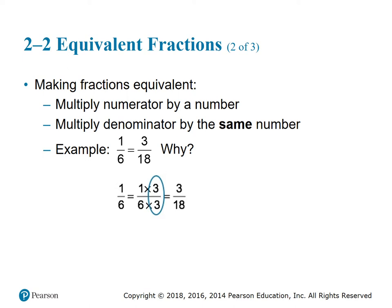How do we create an equivalent fraction? We simply multiply both the numerator and the denominator by the same number. For example, 1/6 equals 3/18 because we multiplied the 1 by 3, giving 3, and the 6 by 3, giving us 18. If we had chosen 2, multiplying 1 by 2 and 6 by 2, we would get an equivalent fraction of 2/12.